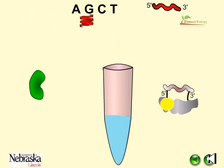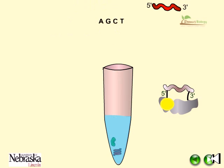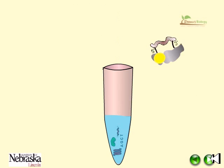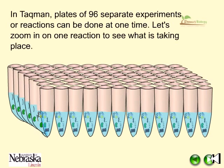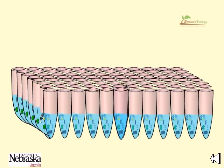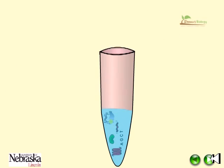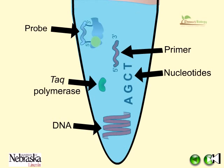The reaction buffer and water are added, then one by one all the ingredients are added to the system. In TaqMan, plates of 96 separate experiments or reactions can be done at one time. Let's zoom in on one of the reactions to see what is taking place — we are having all the ingredients in our tube.